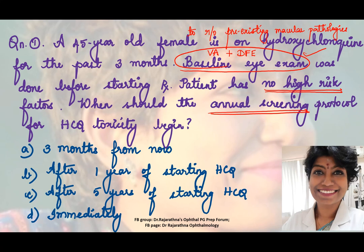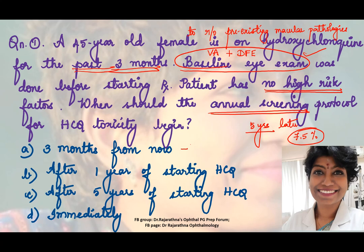Since our patient has no high-risk factors, we start screening five years after starting hydroxychloroquine, because nothing really happens in the first five years. The textbook states that after five years, there is a 7.5% prevalence of bull's eye maculopathy. Looking at the options: A — three months from now — no, that would be only six months total. After one year — no. After five years of starting hydroxychloroquine — yes. Immediately — no.